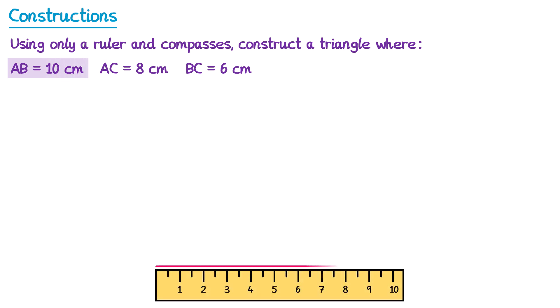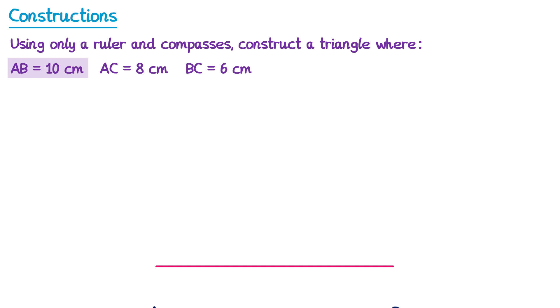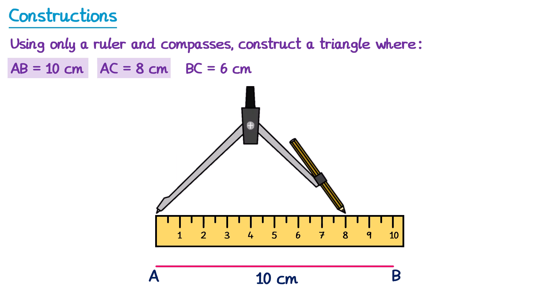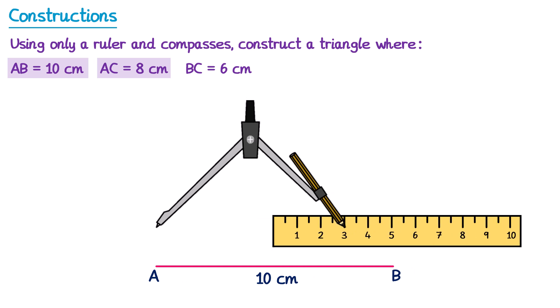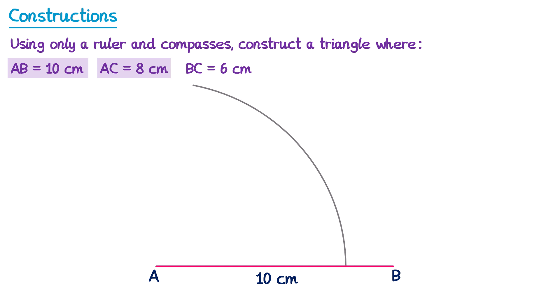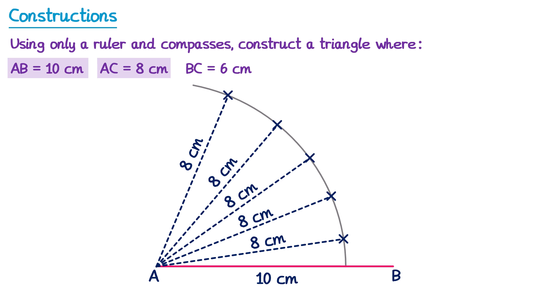Now let's look at the next line, AC, which is 8 centimetres. So we need to draw a line from A to another point C that's 8 centimetres in length, but we won't really know where this point is going to be. So we take a ruler and a pair of compasses and open them up so they're exactly 8 centimetres wide. If we then place the sharp point at A and draw an arc, we know that our point C must be somewhere on this arc, because all of the points on this arc are 8 centimetres away from A.